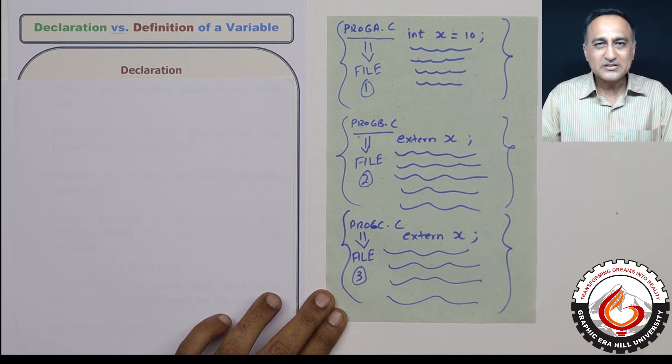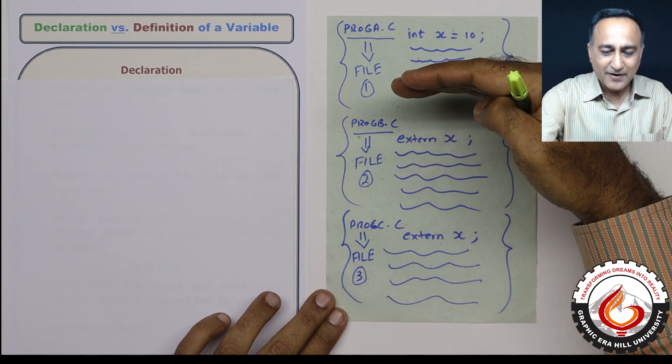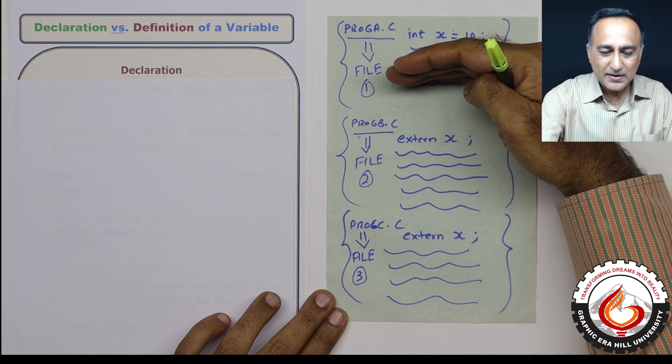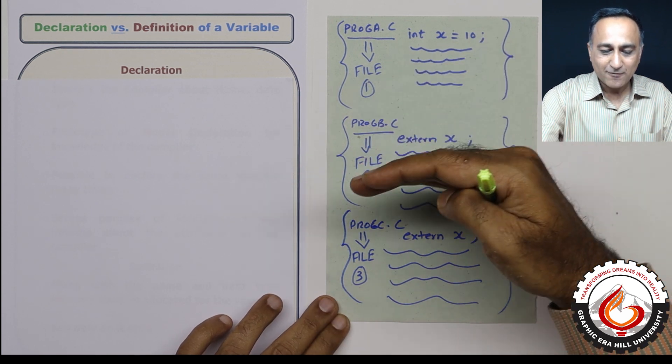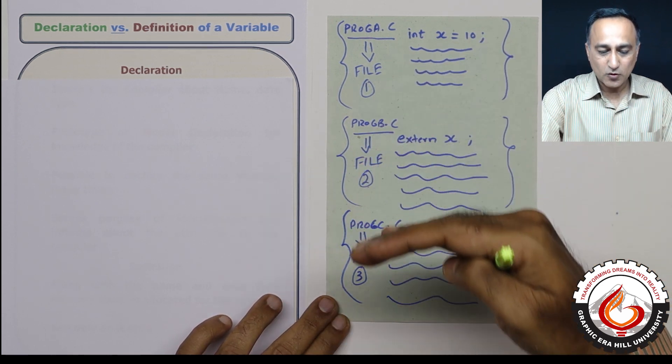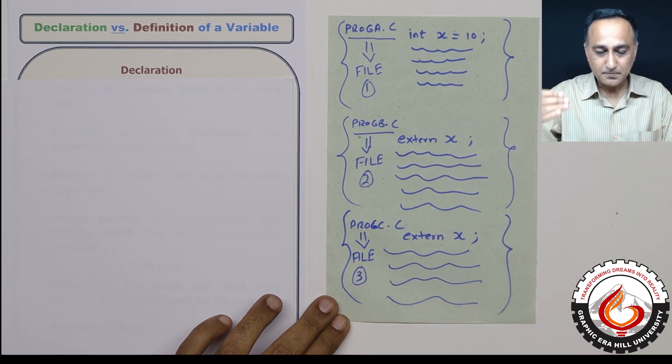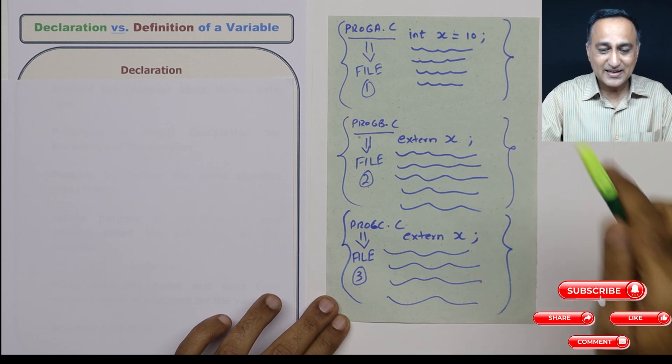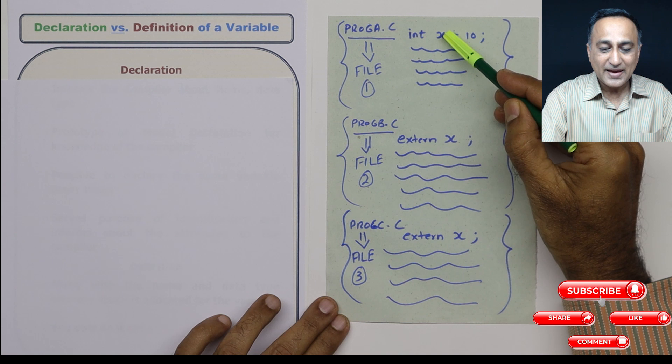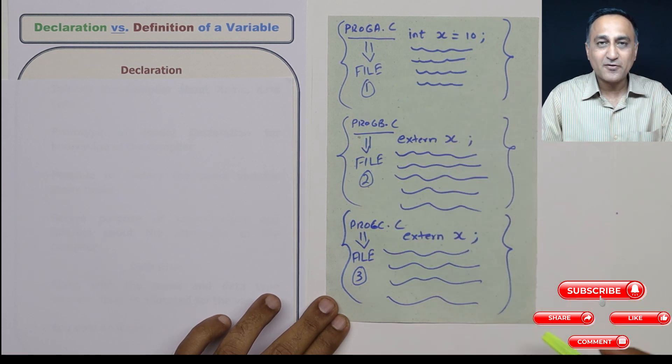Now in the real world, what we do is generally if there is a big project, we divide it into a number of files. So file one, maybe I'll be writing the code, file two, you will be writing the code, file three, let's say Arjun is writing the code. Since three different people are writing the code and let us say they want to use the variable x across these three files.